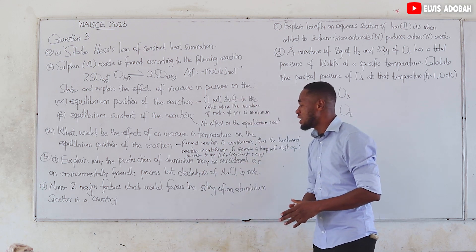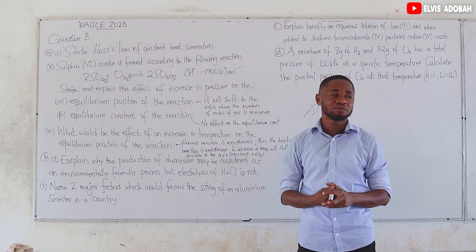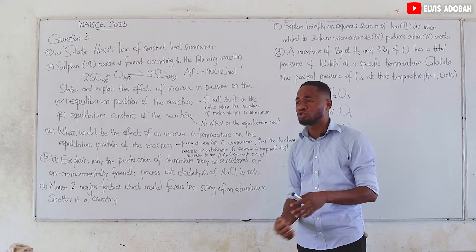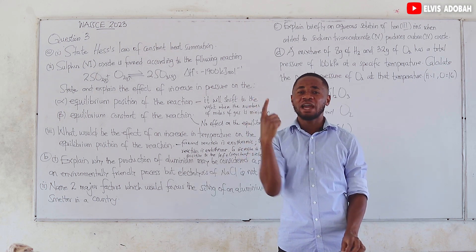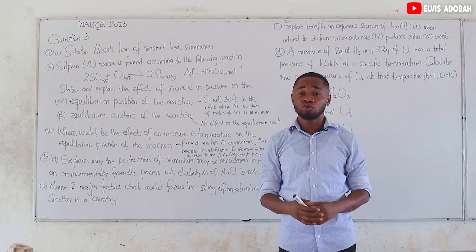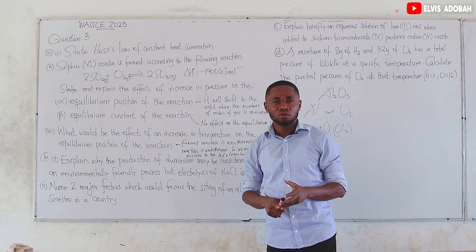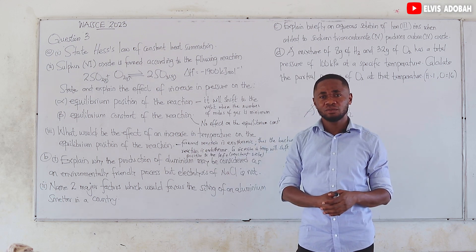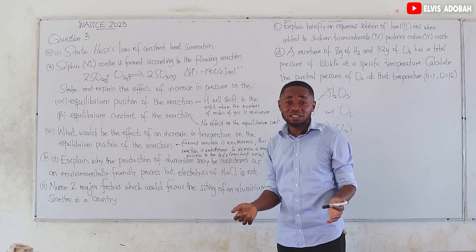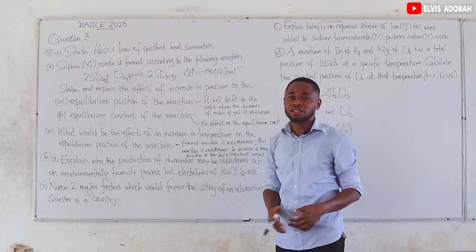Question 3b(ii): Name two major factors that would favour the siting of an aluminium smelter in a country. First, the location should have an abundance of bauxite, the ore of aluminium — so raw materials must be readily available. Second, there should be availability of electricity, since electrolysis of aluminium requires direct current, so cheap or readily available electricity is essential.